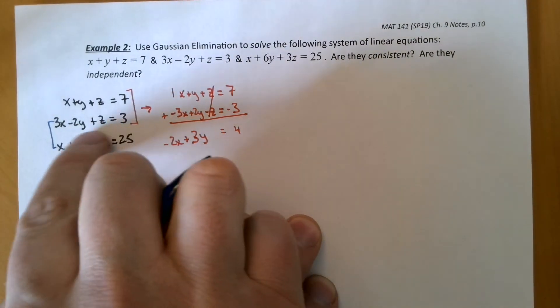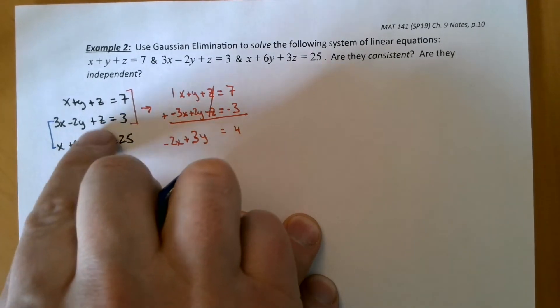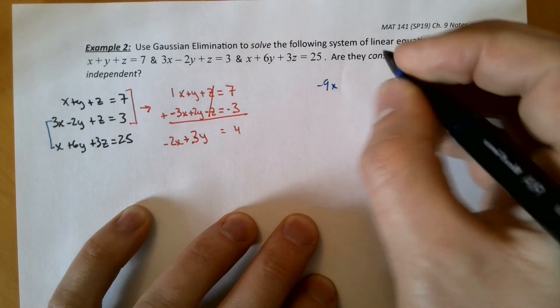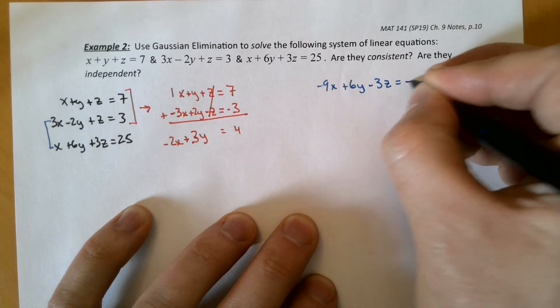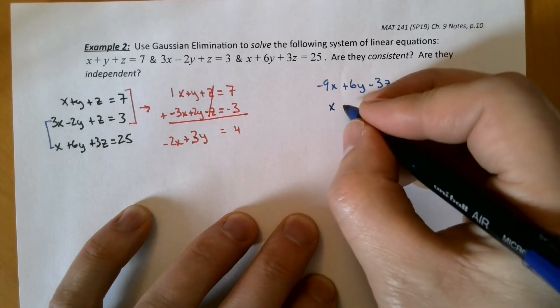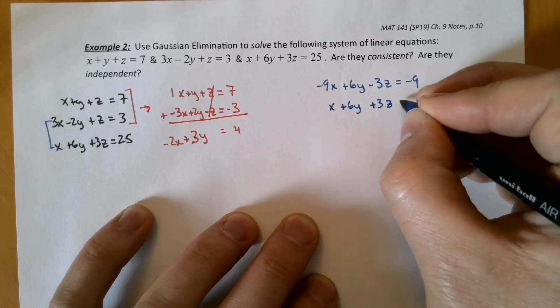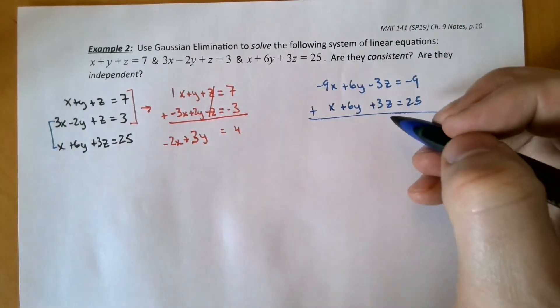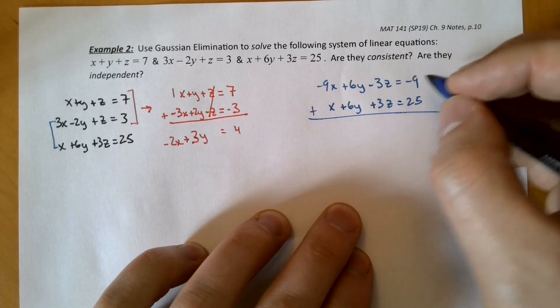And I'm going to multiply the first one by 3. Actually, I'm going to make it negative 3 so we have opposite Z's again. So I end up with negative 9X plus 6Y minus 3Z equals negative 9. And then I'm just copying the other one. X plus 6Y plus 3Z equals 25. And now that I have opposite coefficients for one of the variables, for the Z, the same one over here, I'm just going to add the two together.